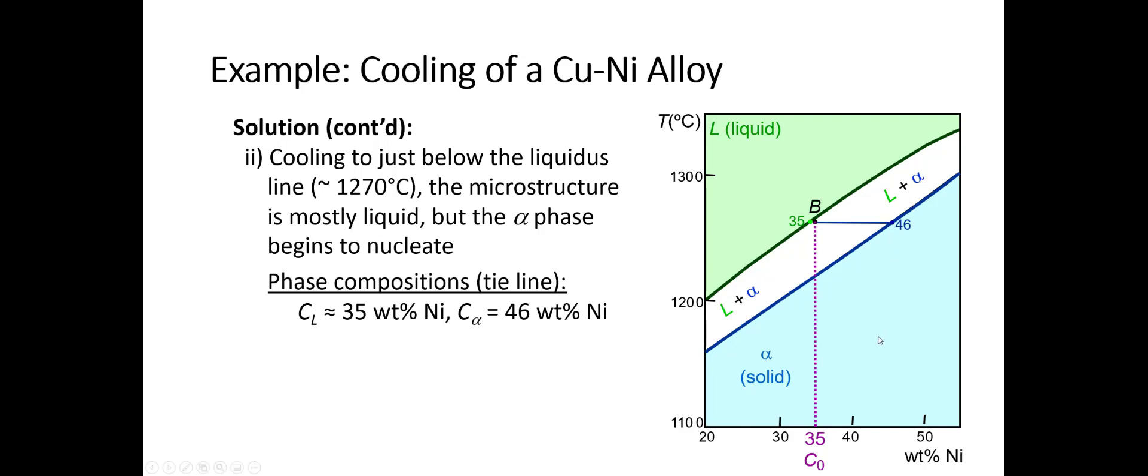We want to find out how much of liquid and how much of alpha exists. Because the liquid composition is roughly at 35 weight percent nickel, our lever rule will come out to be 100 percent liquid and 0 percent alpha. But really, we're just on the other side of that line, so it's about 99 percent liquid and about 1 percent alpha. If you were drawing that microstructure, you'd just draw little dots to indicate the alpha is beginning to nucleate inside the liquid, and then the green would be the liquid surrounding.